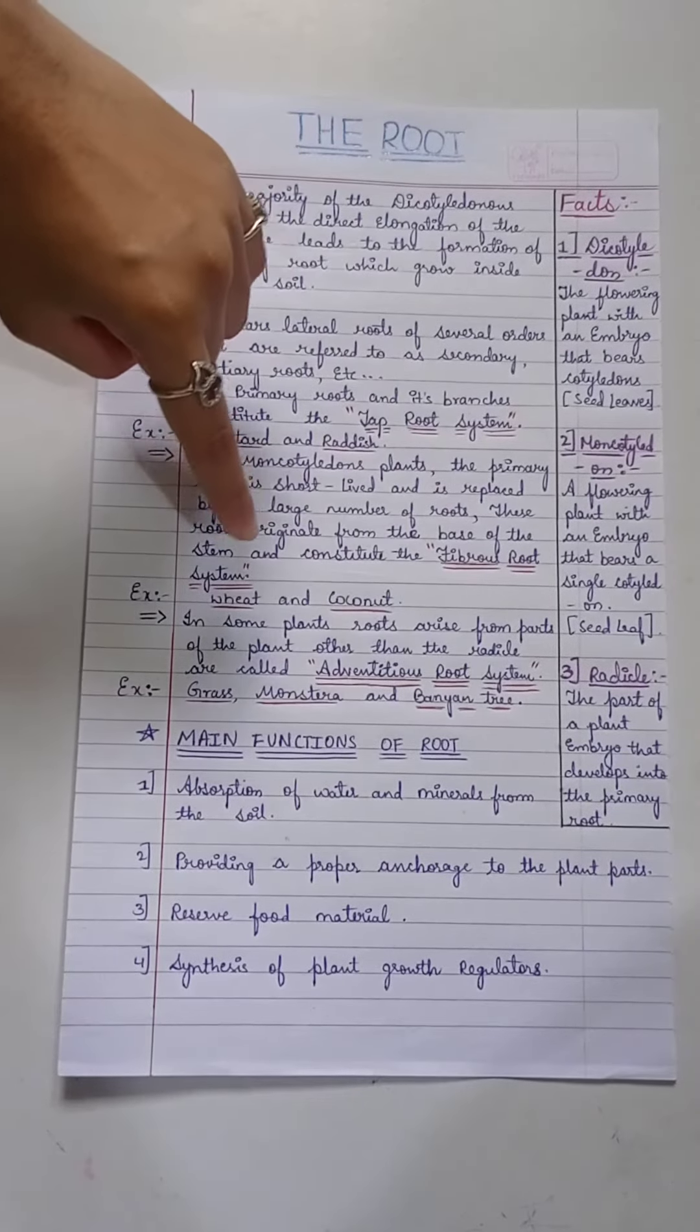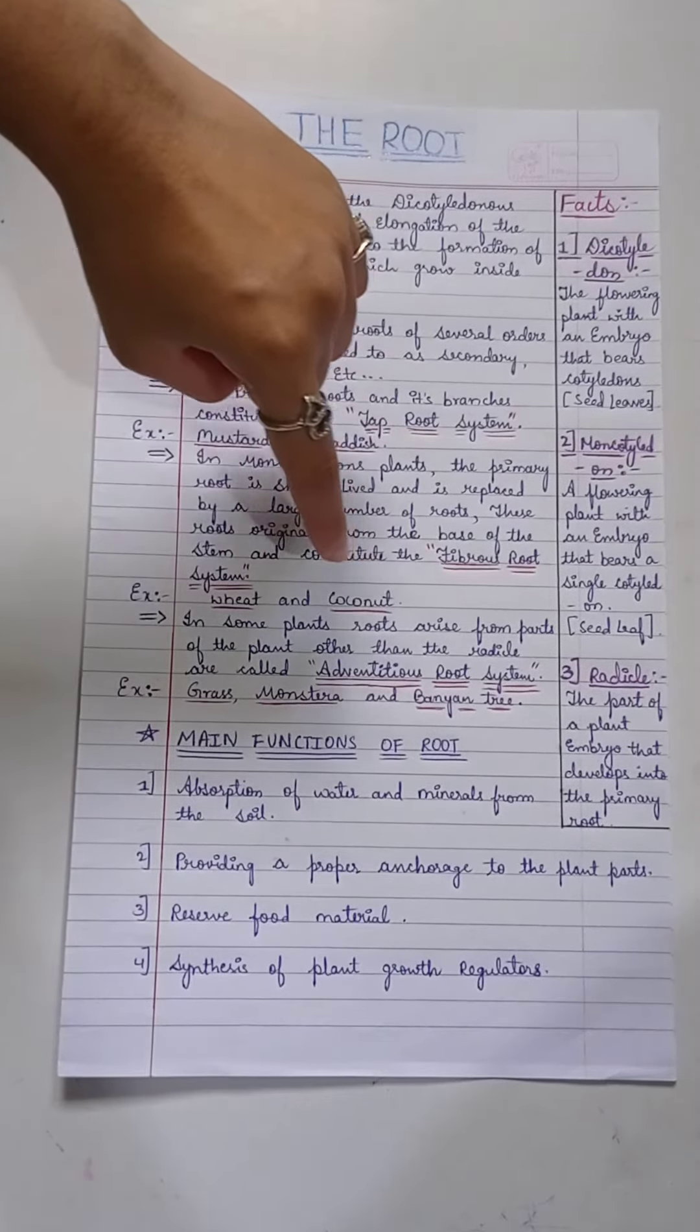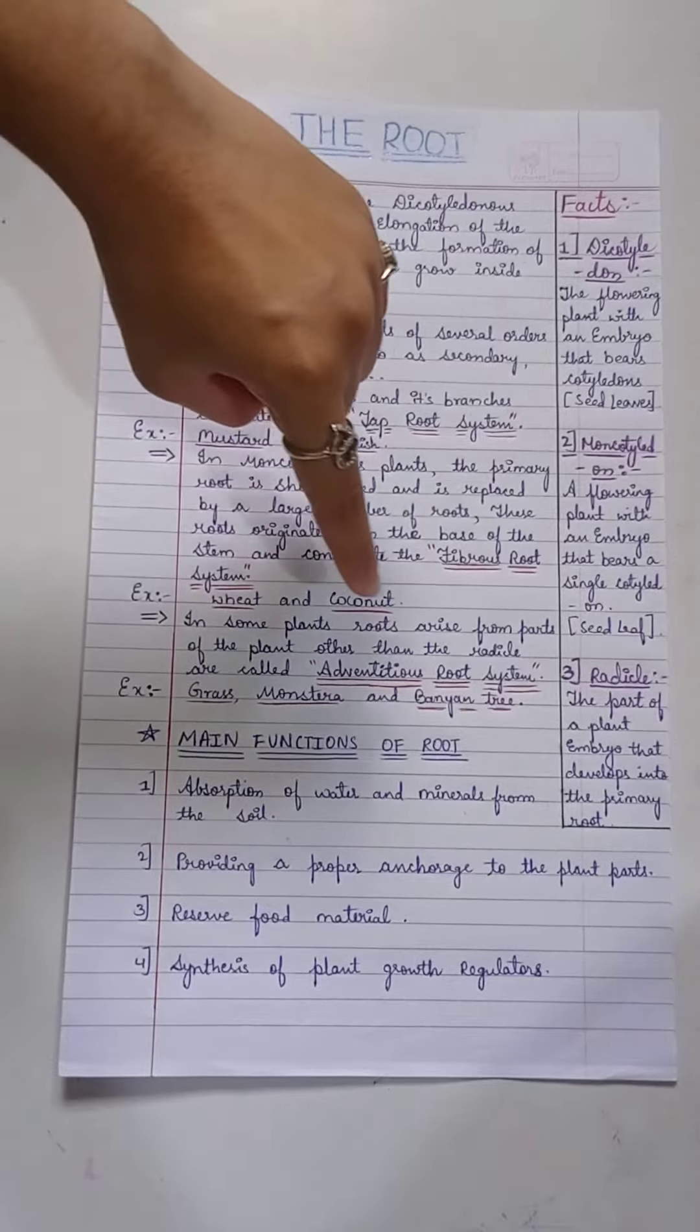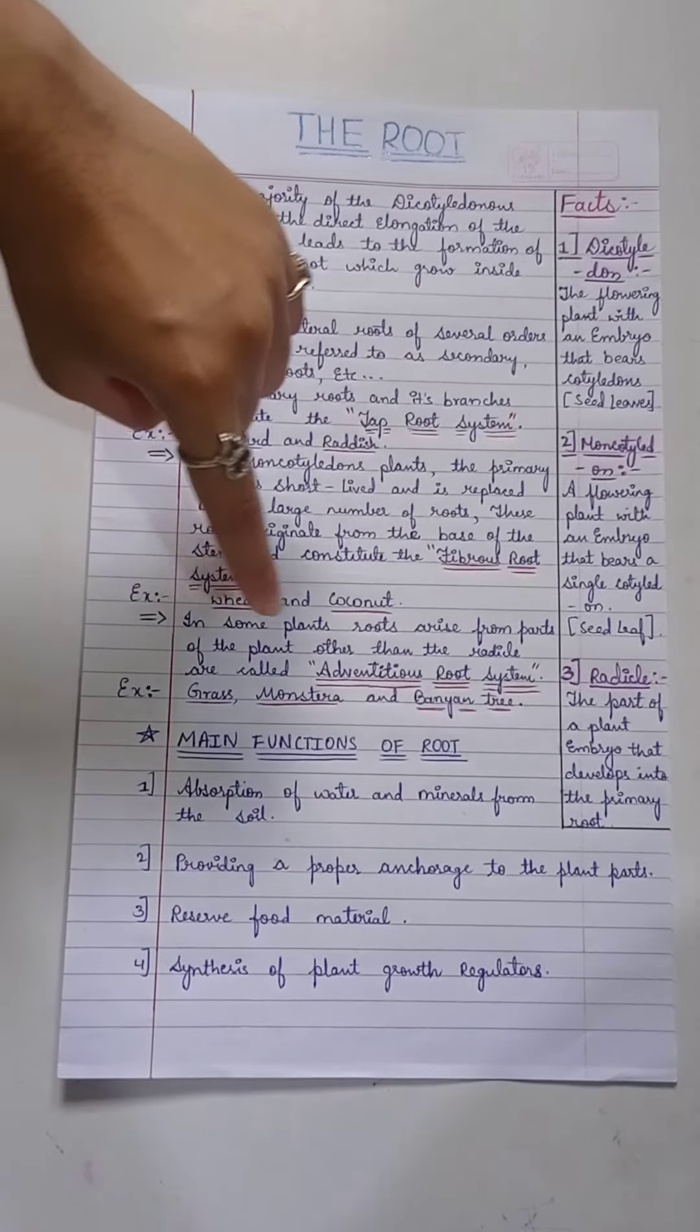In some plants, roots arise from parts of plant other than the radical and are called adventitious root system, example: grass, monstera, and banyan tree.